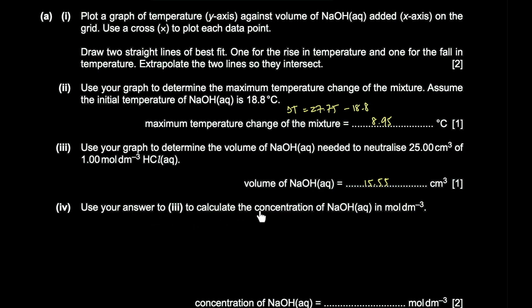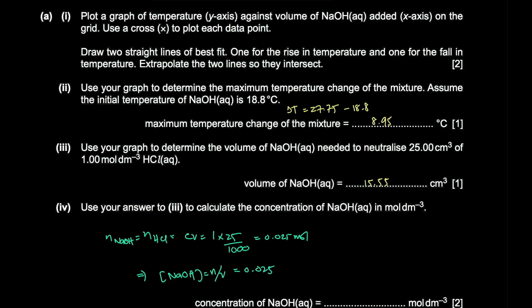To calculate the concentration of aqueous sodium hydroxide: moles of HCl = 1 × (25/1000) = 0.025 mol, which equals the moles of NaOH needed for neutralization. Concentration of NaOH = 0.025 ÷ (15.55/1000) = 1.61 mol/dm³.